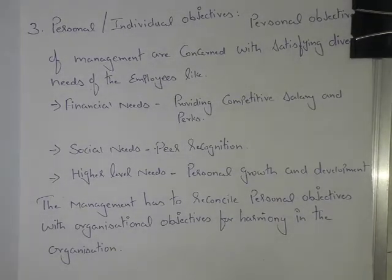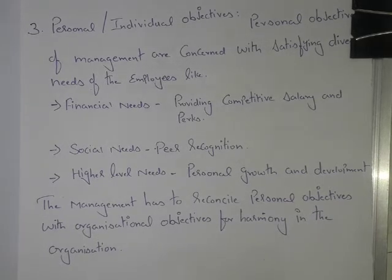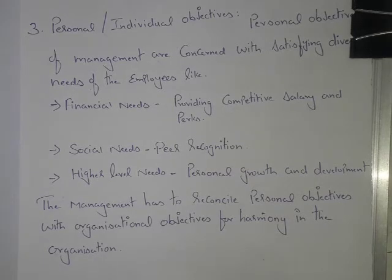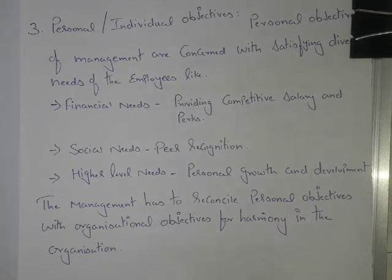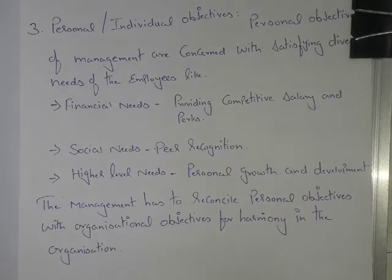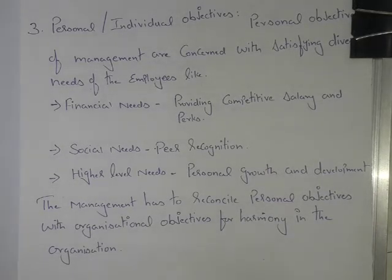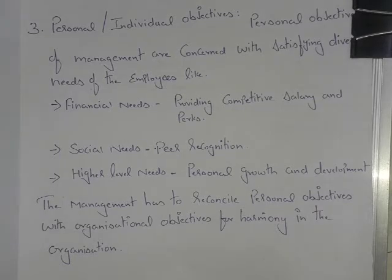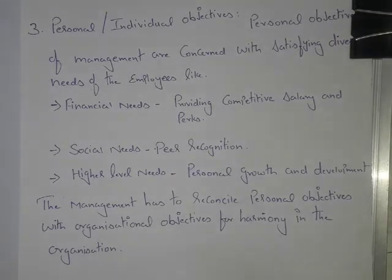Perks are additional benefits such as providing a furnished house, cab facilities or a car for personal and official use, and other benefits like children's education or college or hostel facilities. Social needs are about recognition — recognizing members in an organization. Peers are people with the same age or same social position, and recognition should be given to peers.